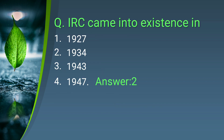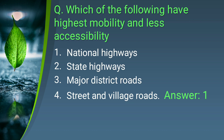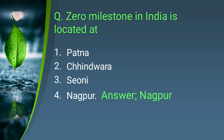The next question: the Indian Roads Congress (IRC) came into existence in which year? The options are 1927, 1934, 1943, and 1947. The answer is 1934. The following question asks: which of the following has the highest mobility and least accessibility? The answer is national highways — they have the highest mobility and least accessibility among all road types.